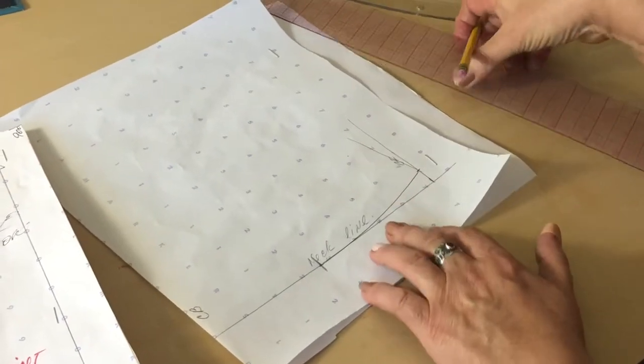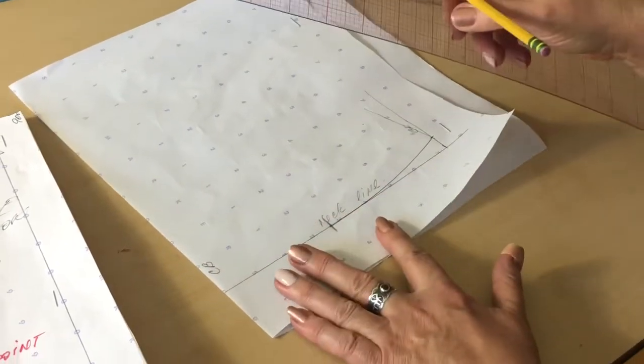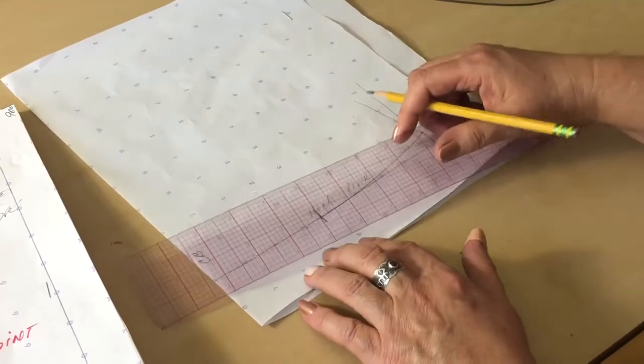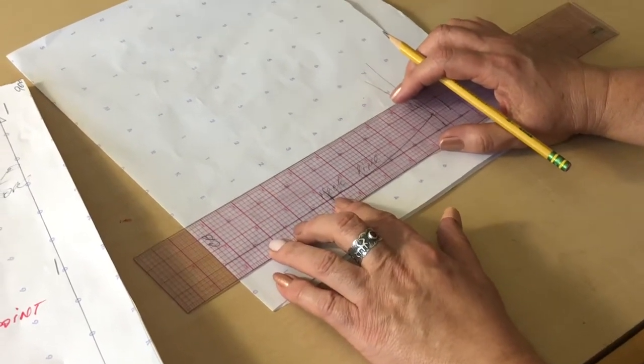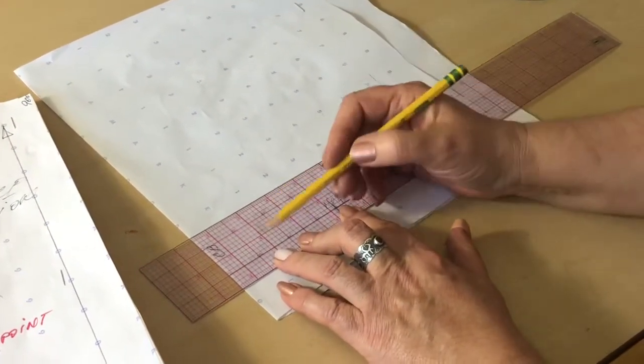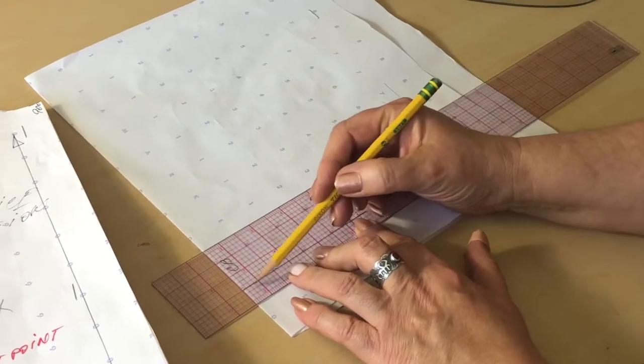Once I construct those lines now I need to decide how high my collar is going to be. Let's assume I want inch and a half high collar.